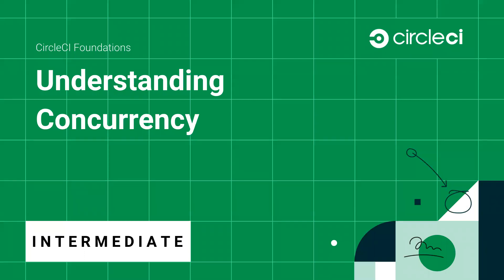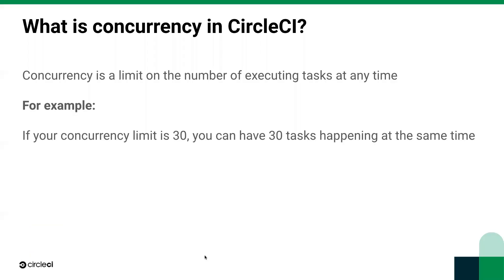Welcome to CircleCI Foundations: Understanding Concurrency. Concurrency is a limit on the number of executing tasks at any time. This definition stays the same across a lot of software, but it can be nuanced once you're actually using it. We're going to talk today about what concurrency in CircleCI means for you and what exactly you need to care about.